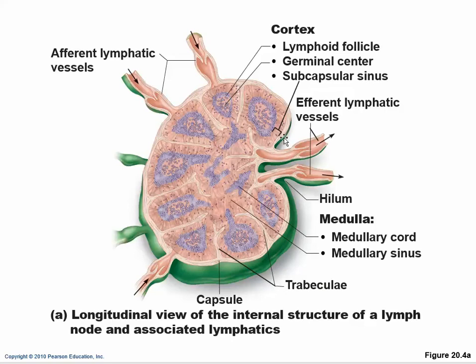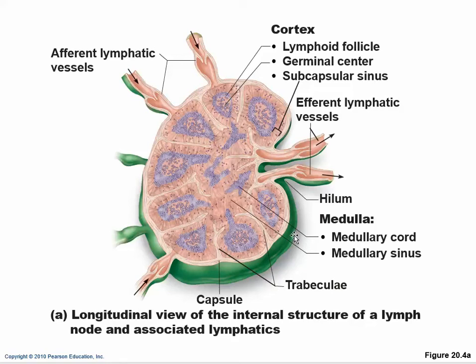Anything that's bean-shaped has an indent called the hilum or hilus. Lymphatic vessels coming into it are called afferent vessels — afferent means coming towards — and vessels leaving are called efferent vessels. There are far more afferent vessels than efferent vessels. If you had five lanes of traffic reduced to two lanes, traffic would slow down. By having five inputs and only two outgoing vessels, the lymph slows down, giving time for the filtering, macrophages, and lymphocytes to do their work.